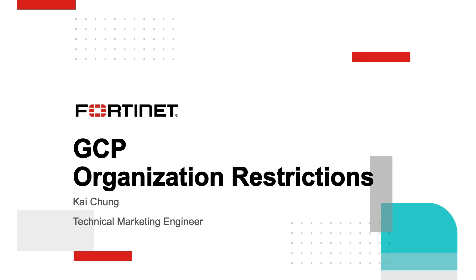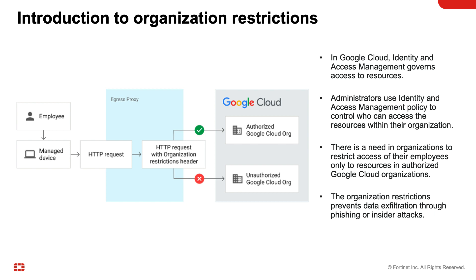In Google Cloud, Identity and Access Management, or IAM, governs the access to resources. Administrators use IAM policy to control who can access resources within their organization. There's a need to restrict access to employees only to resources in authorized Google Cloud organizations. The organization restriction feature lets you prevent data exfiltration through phishing or insider attacks. For managed devices in an organization, this feature restricts access only to resources in authorized Google Cloud organizations.